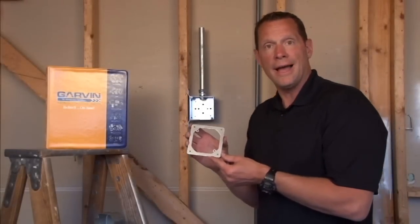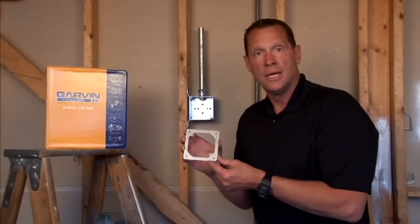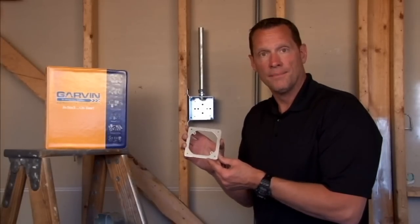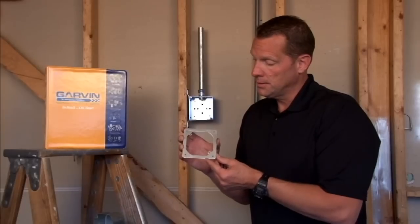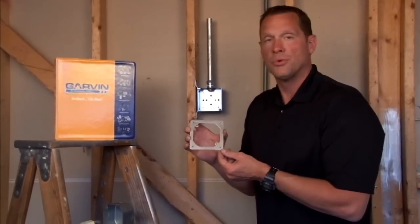Garvin Industries part number 52C1-OCT is a 4 inch flat ring that converts octagon boxes to a 4 inch square threaded mounting provision.